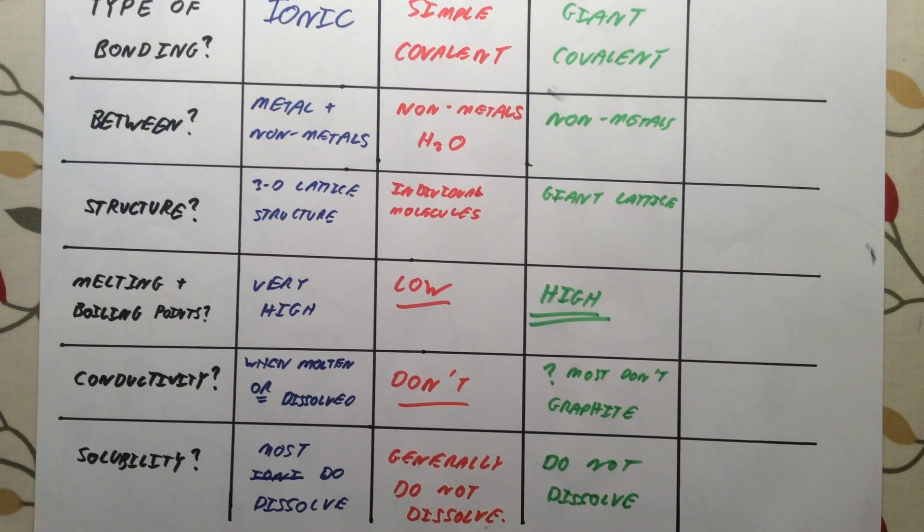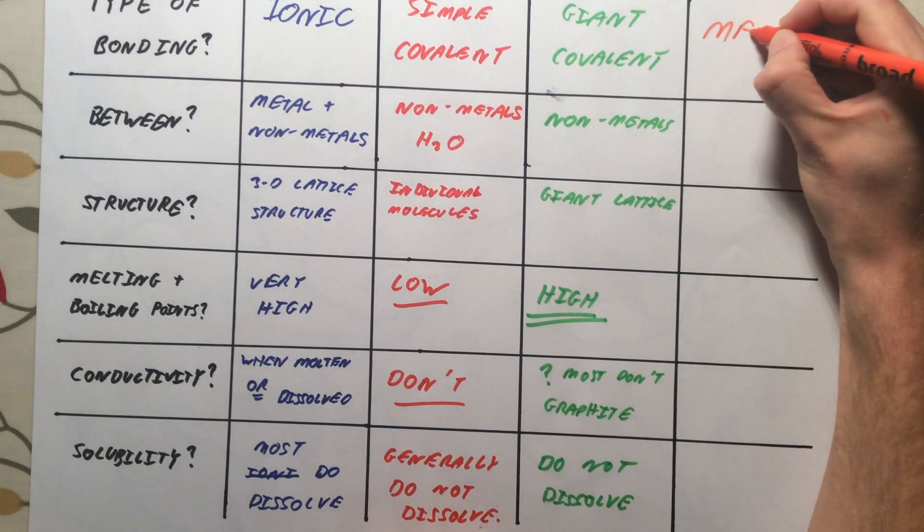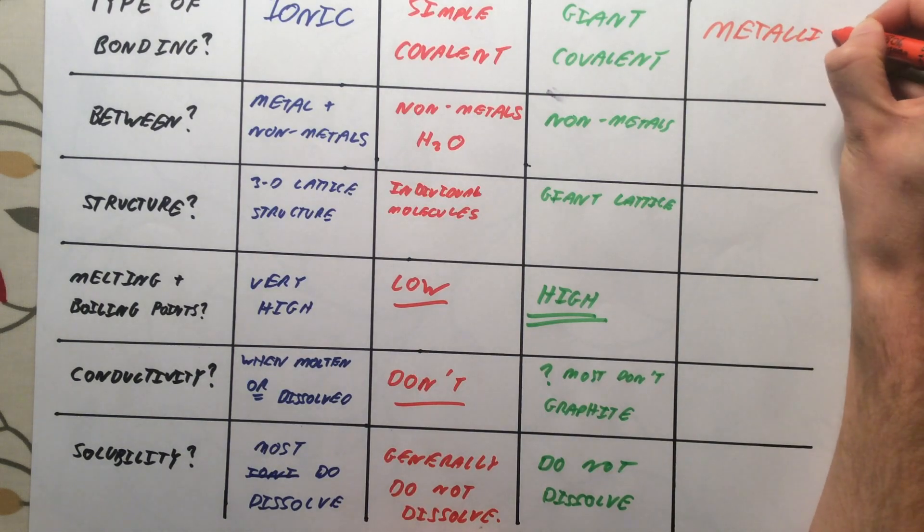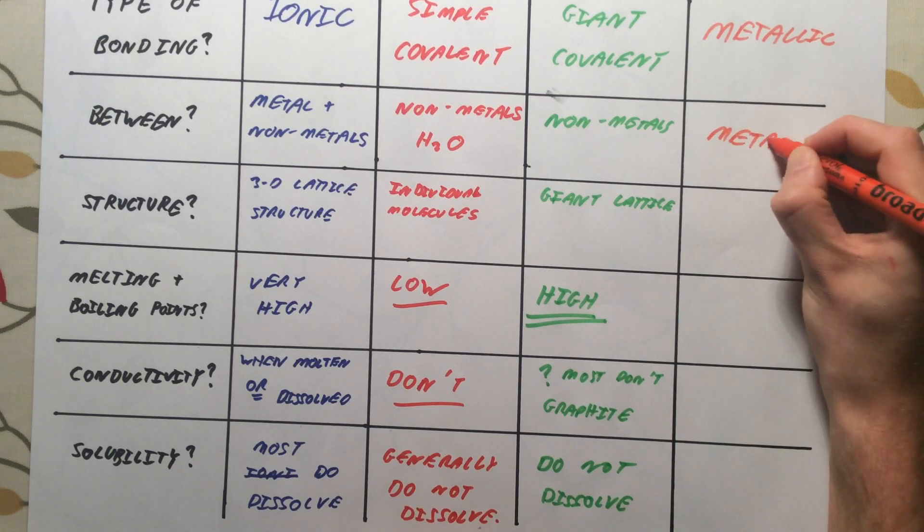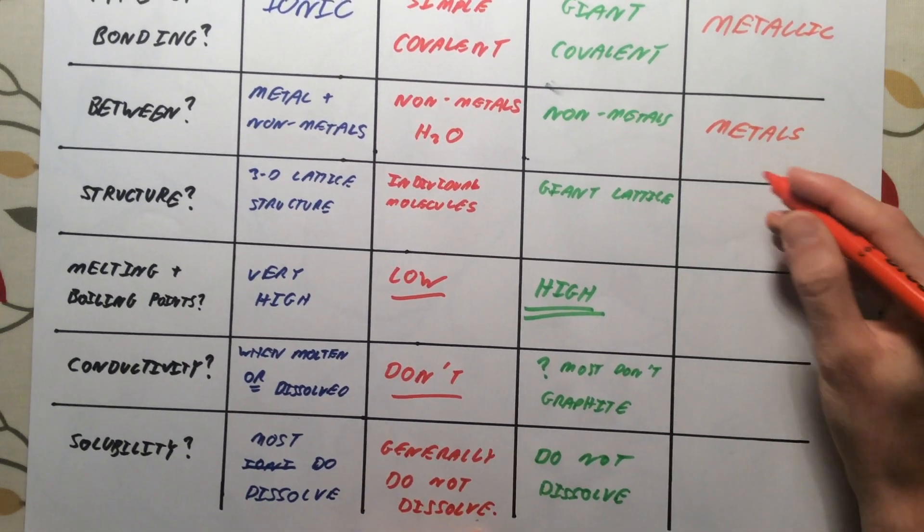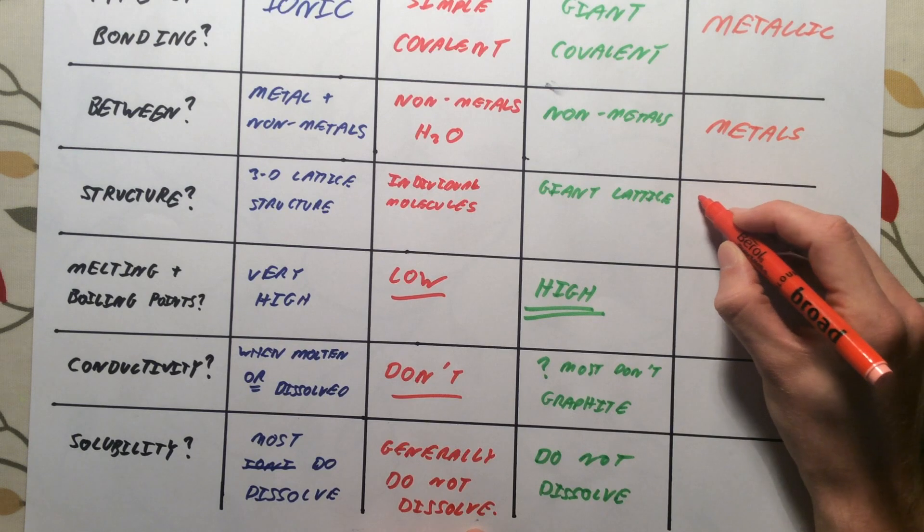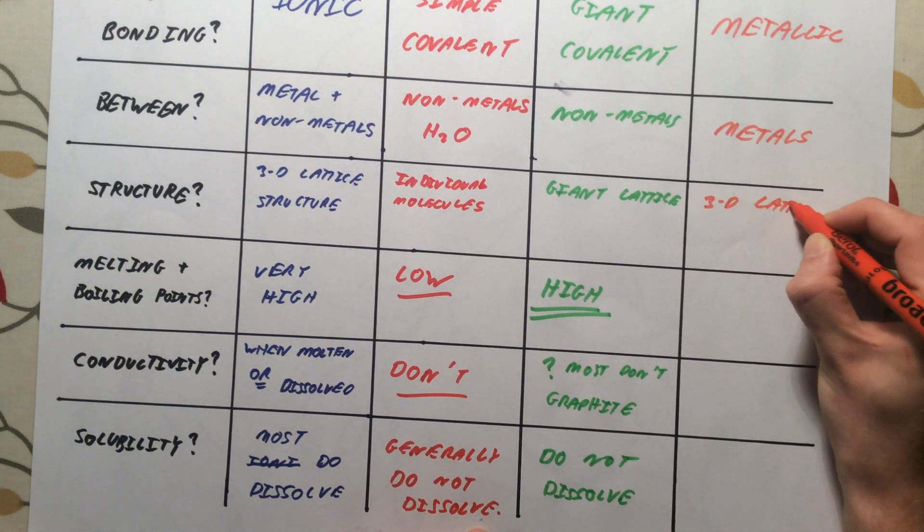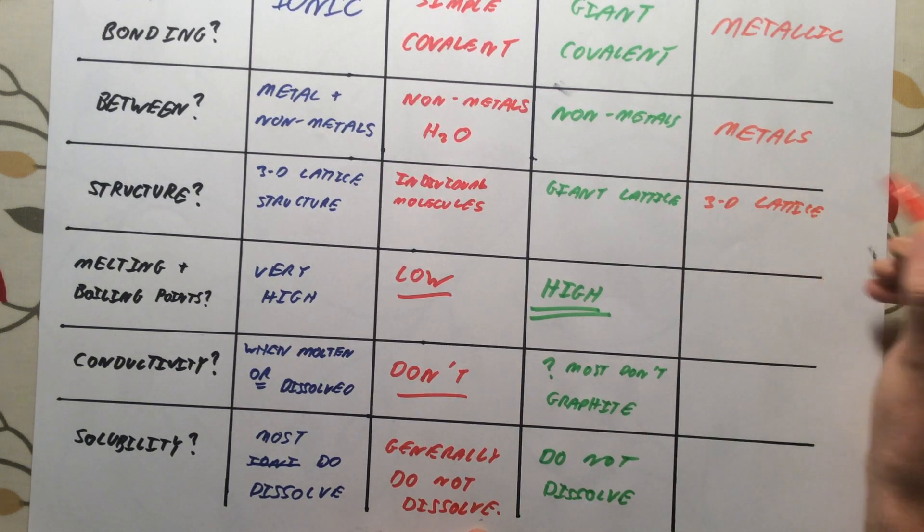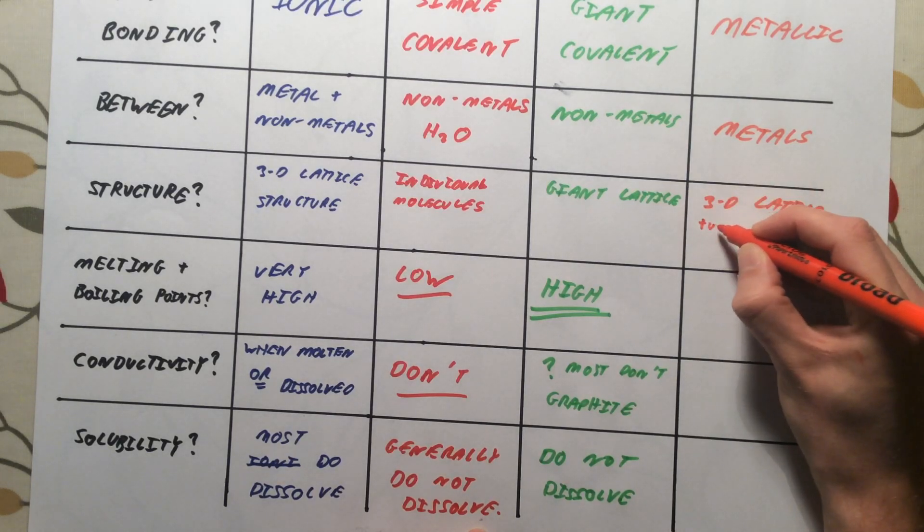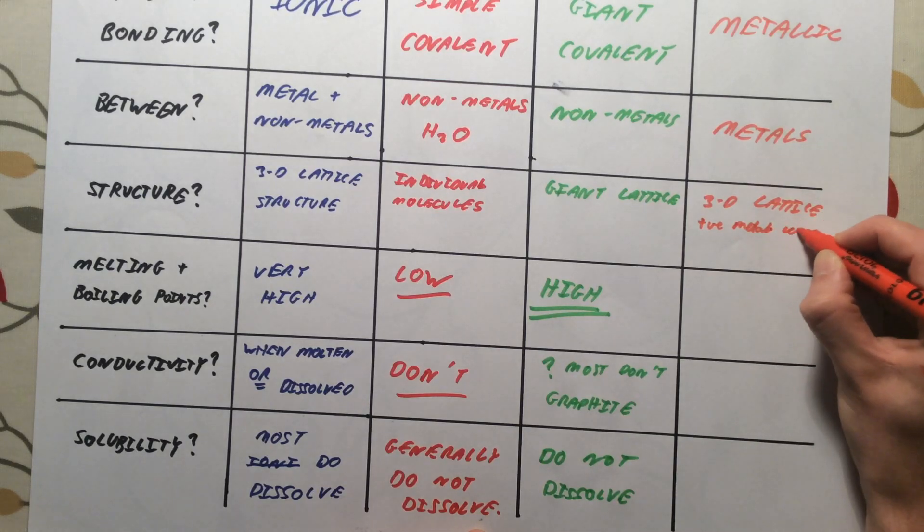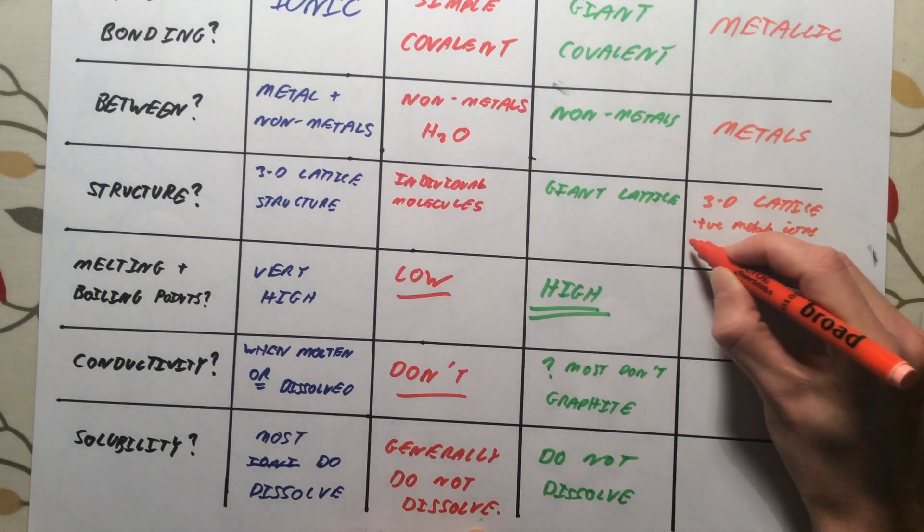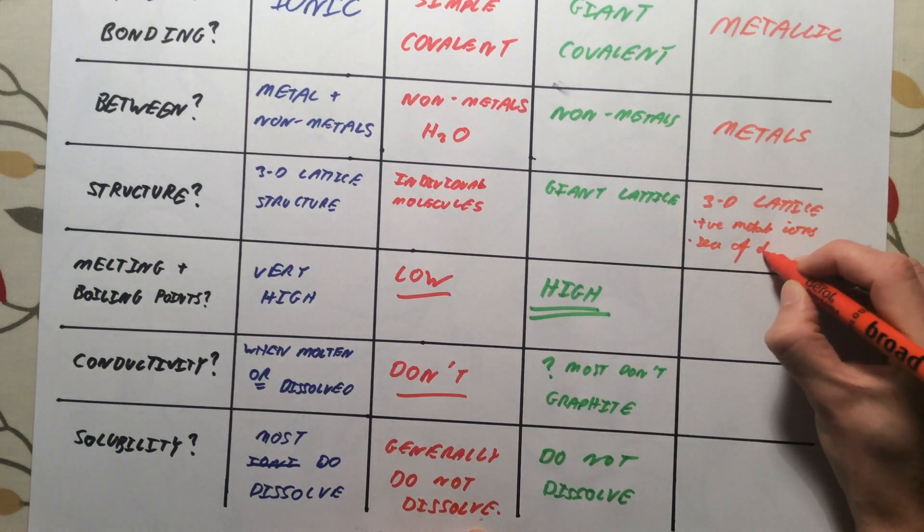The final type of bonding we need to know about is metallic bonding. Between, pretty obvious, metals. So, metal atoms. Structure. We get another lattice. But this time we have got positive metal ions surrounded by a sea of delocalized electrons.